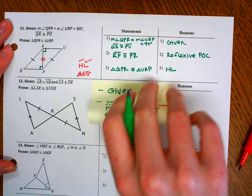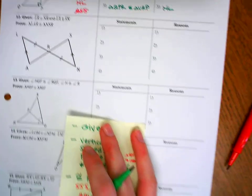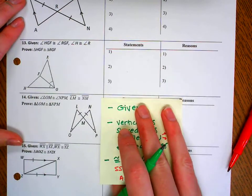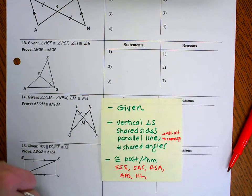So now I can say that triangle QPR is congruent to triangle URP by HL. Okay, let's keep going. We're going to skip down to 13 because we're just doing the odds today. You need to finish the rest of your homework on your own, and we'll go over it next class.